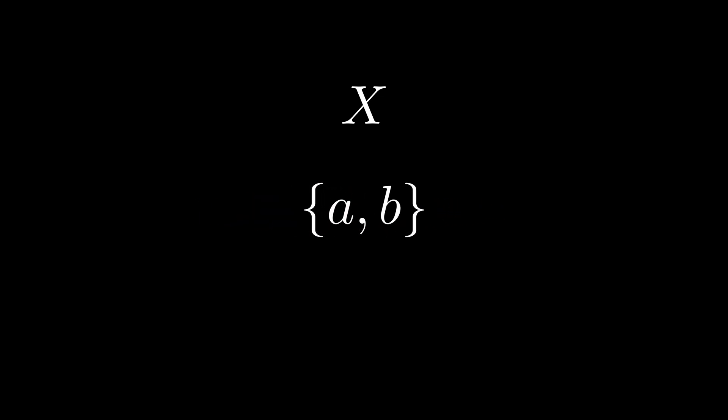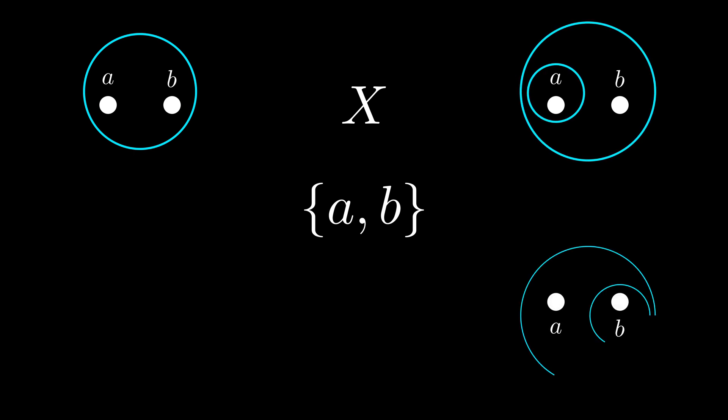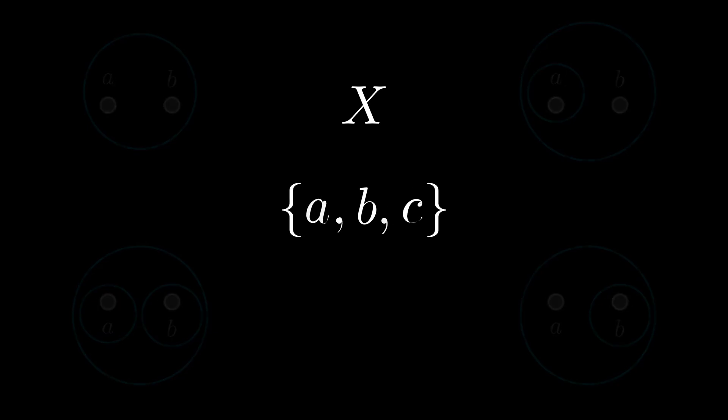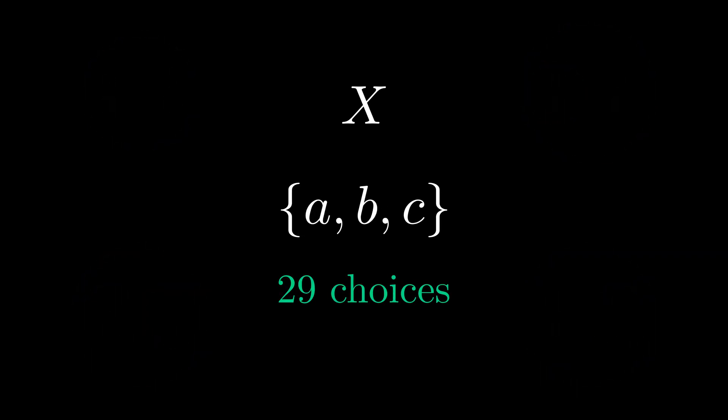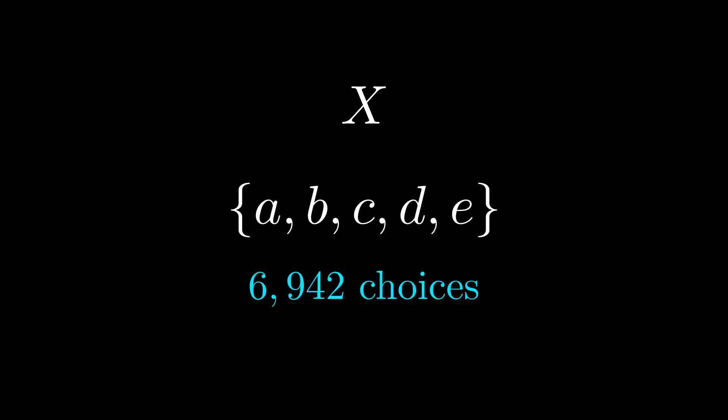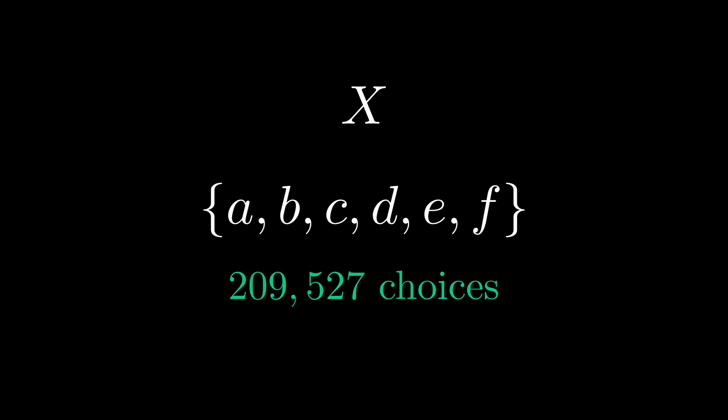For a two element set, there are four choices for topologies. A three element set has 29 choices and a four element set has 355 choices. You can see the number of choices grows quickly. So as the size of the set increases, the number of interesting topologies available also rapidly increases.